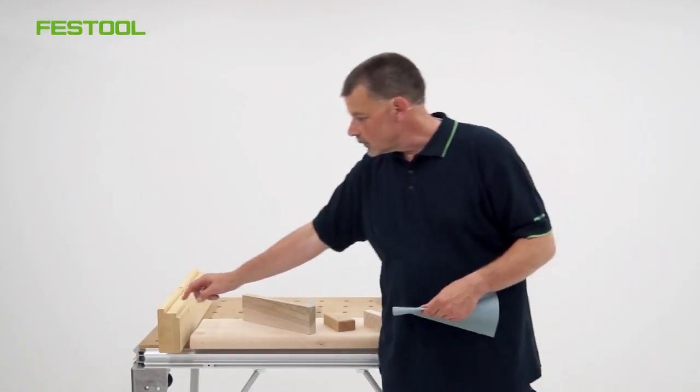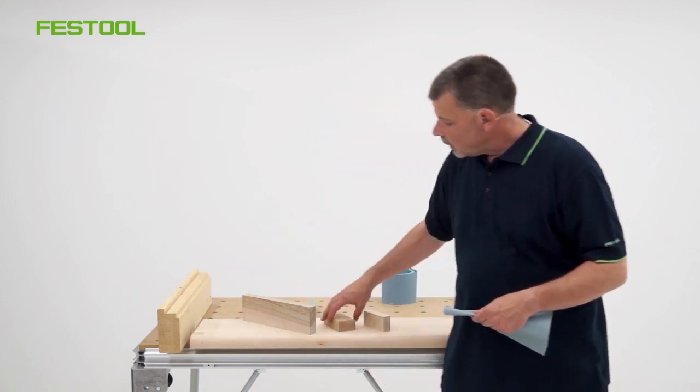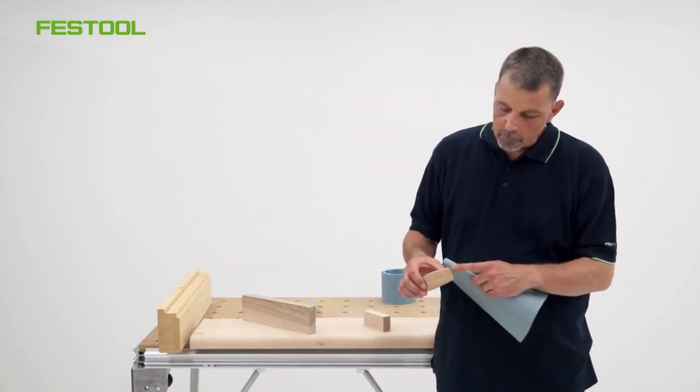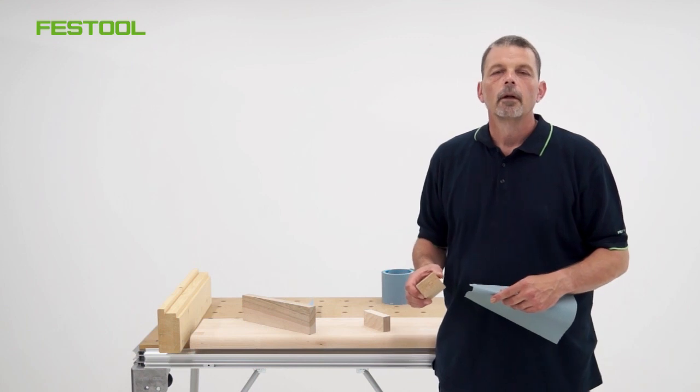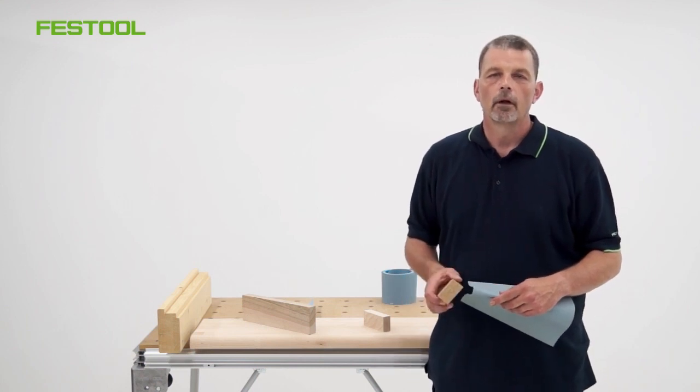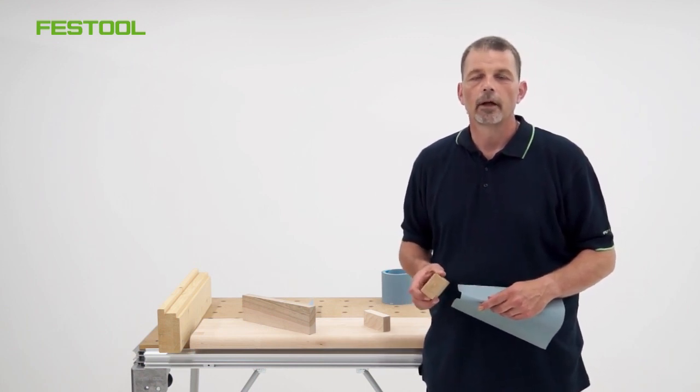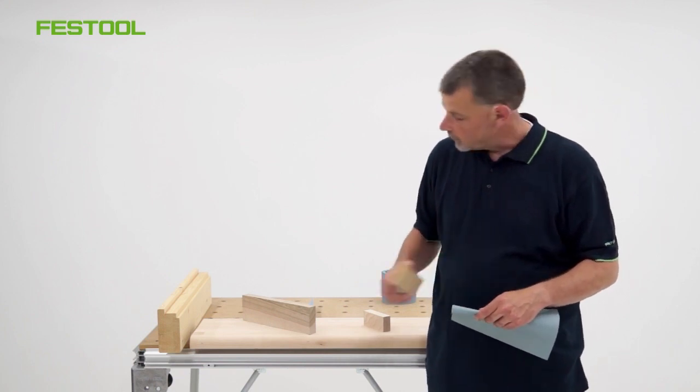Therefore when I am sanding into a rebate such as this one and when I fold the abrasive around the corner of my block, I get a really good high quality finish without any risk of breakout of the abrasive along these lines.